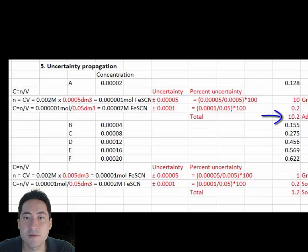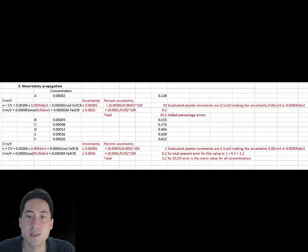So this divided by 50 cm³ gives us a 0.2% uncertainty. As this calculation is divided, we add percent uncertainties rather than actual uncertainties. This gives a total uncertainty of 10.2%.